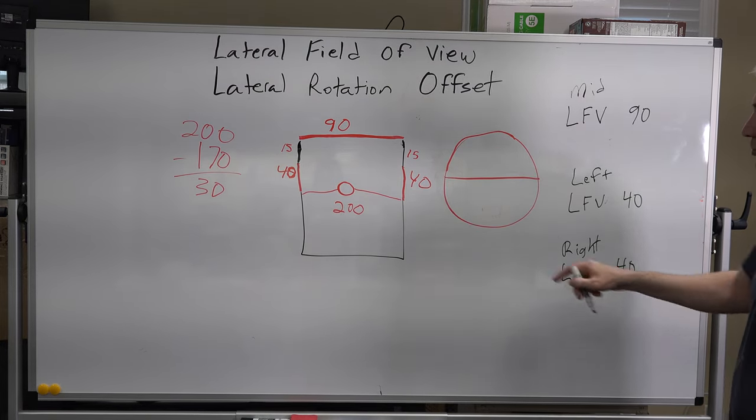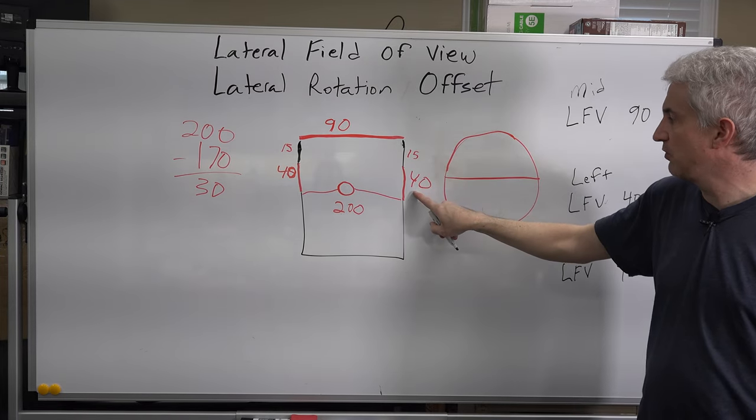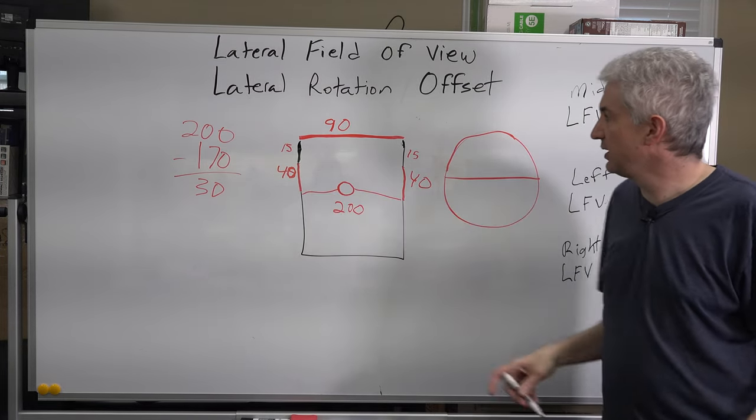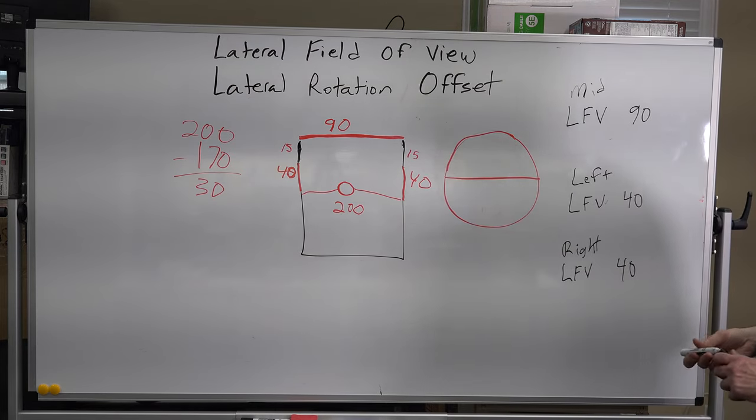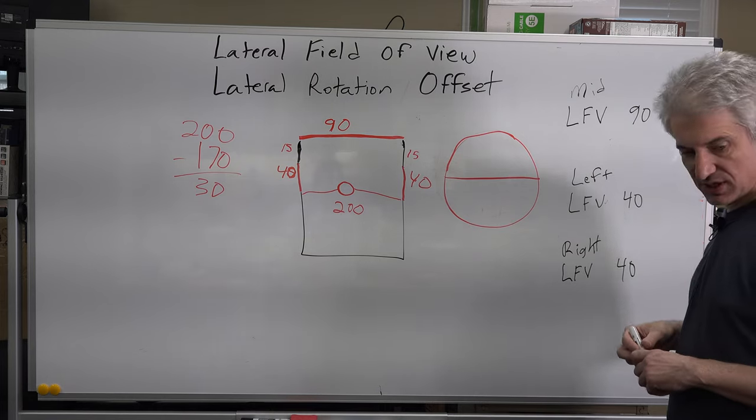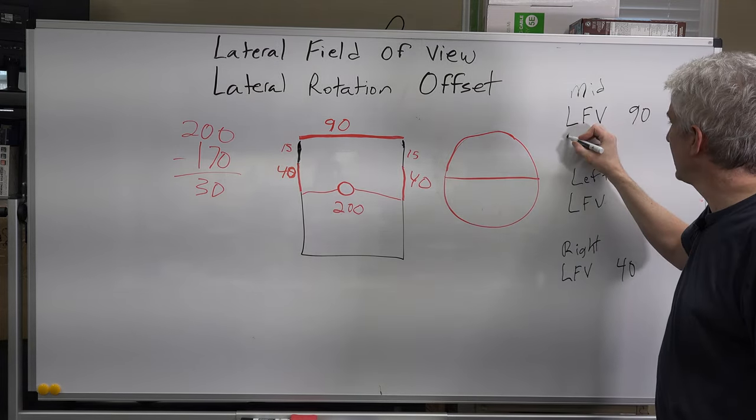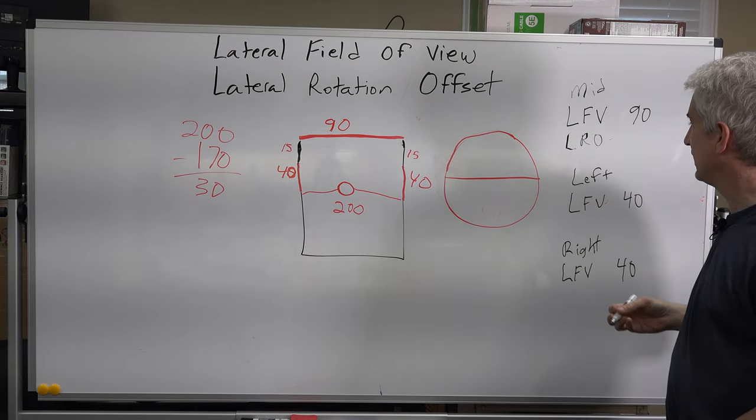Where did I get those numbers from? We already said 90 degrees is our lateral field of view here, 40 and 40, and then we have a 15 degree dead zone. So the next thing we got to figure out is what is our lateral rotation offset.